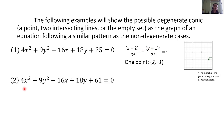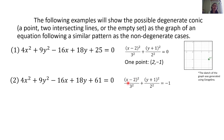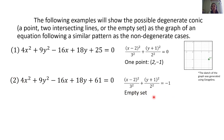Second: 4x squared plus 9y squared minus 16x plus 18y plus 61 equals 0. Again the general form suggests an ellipse, but the standard form gives: the quantity of x minus 2 squared over 3 squared plus the quantity of y plus 1 squared over 2 squared equals negative 1. Since the right side is negative, this gives an empty set.